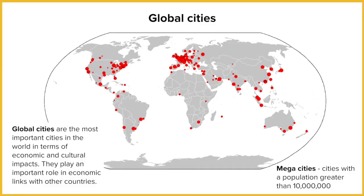The map I'm showing you now is the distribution of global cities across the world. What you notice is Europe has the most clustered area of global cities — the largest distribution of them — and the reason for that is they're some of the oldest modern cities in the world.